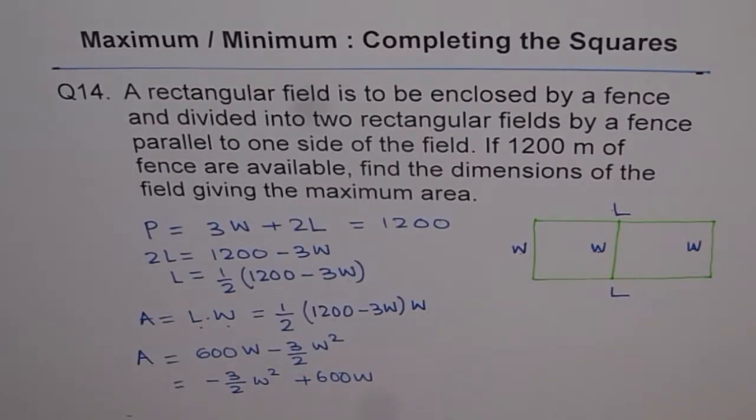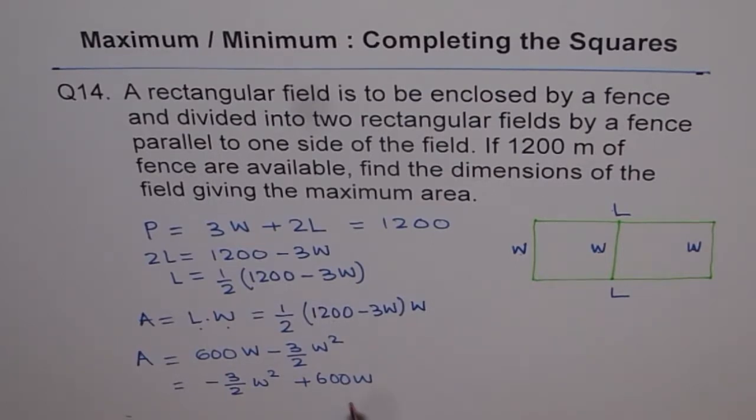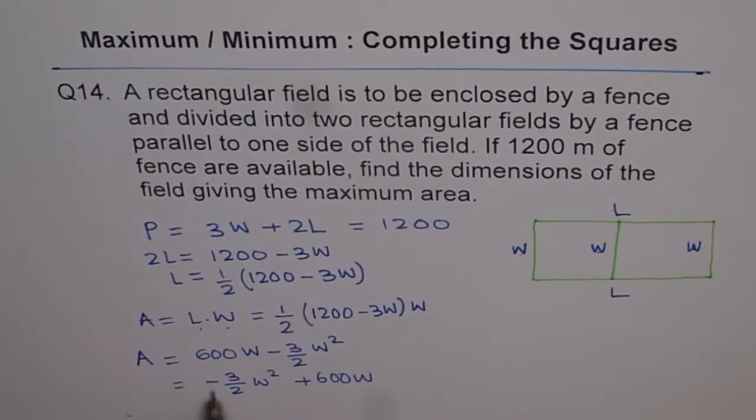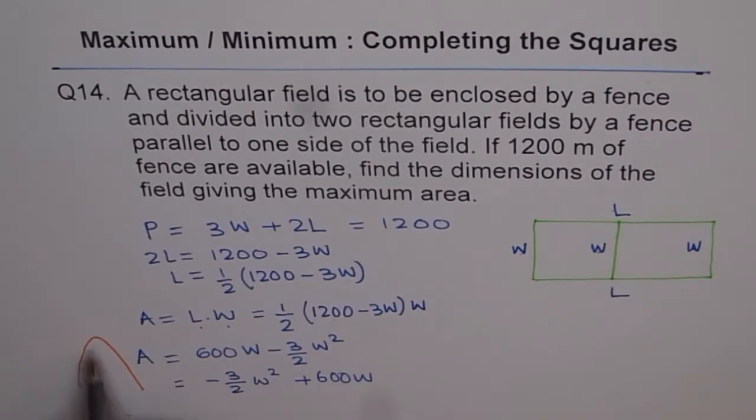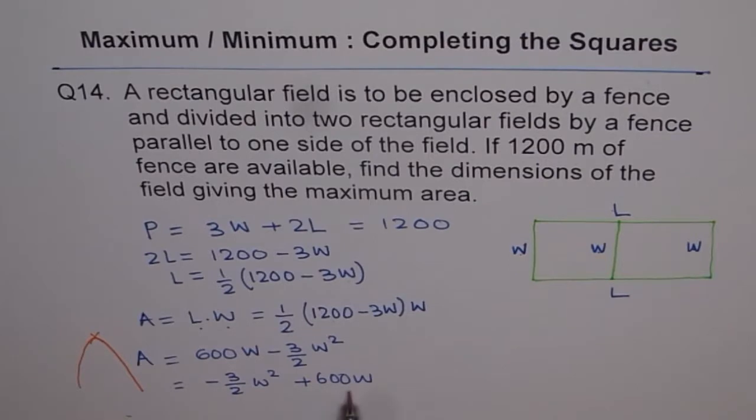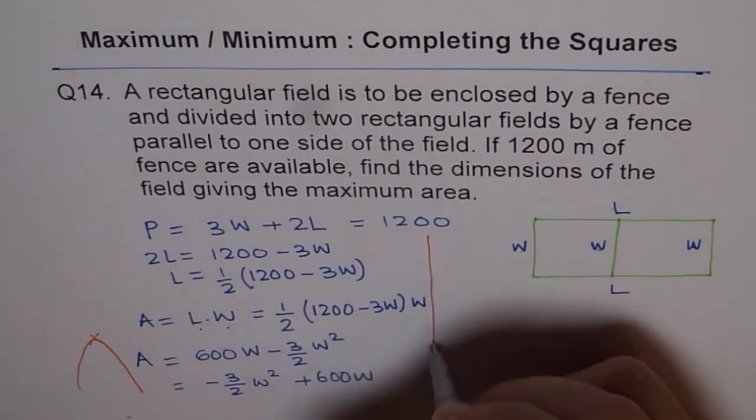And now, to find the maximum area, we'll adopt completing the squares method, find the vertex. Now since this is negative, we know our parabola is going to open downwards, right? Like this. And therefore, we are expecting a maximum here at the vertex. By completing the squares, we'll get the point of the vertex. And that will give us the maximum dimensions, correct? So let's do that part.